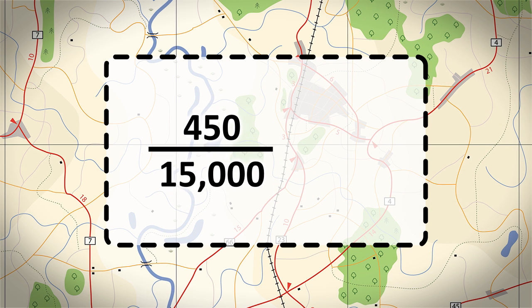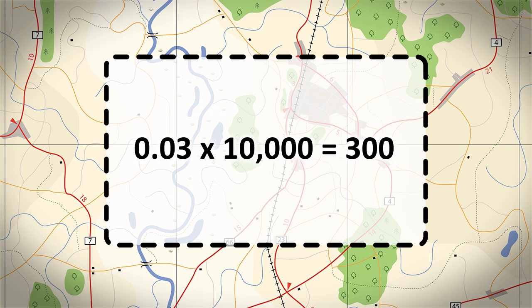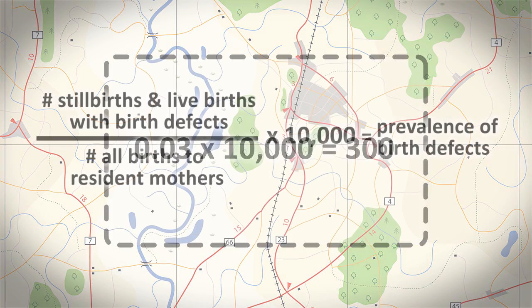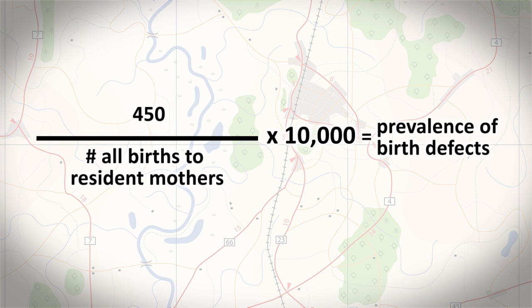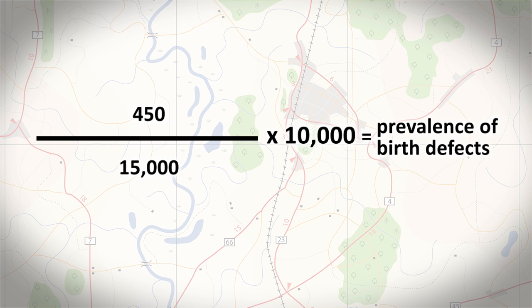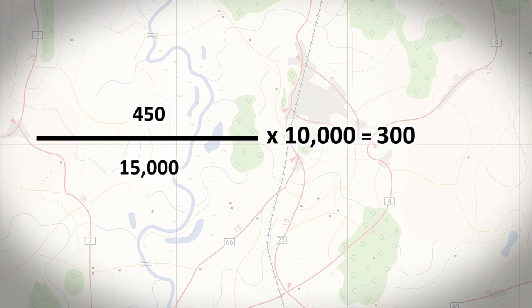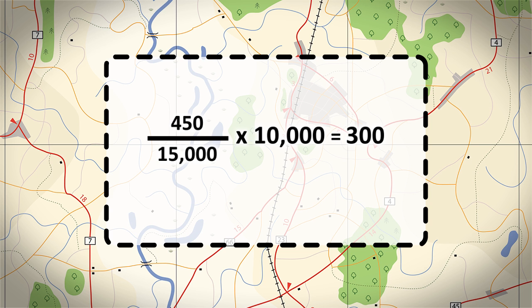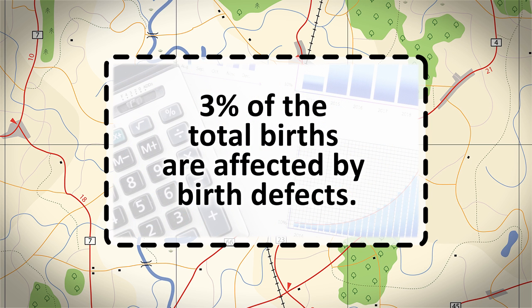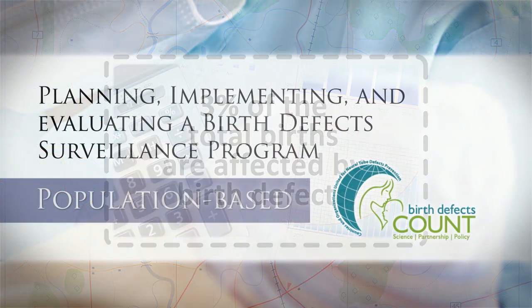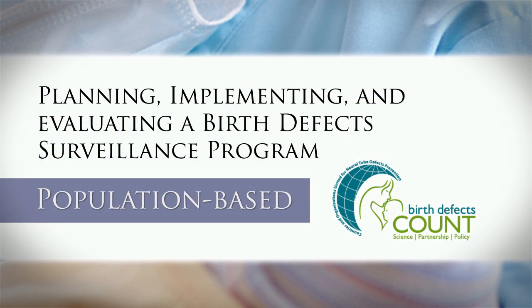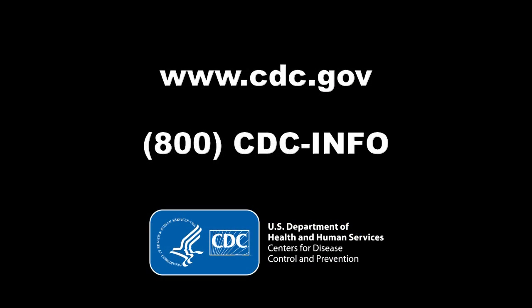Finally, divide the numerator by the denominator and multiply the result by 10,000. For example, if in one year 450 stillbirths and live births with birth defects are divided by 15,000 total births and then multiplied by 10,000, the result is 300 cases of birth defects per 10,000 births. One could summarize this result as 3% of the total births are affected by birth defects. Data on pregnancy outcomes are used to estimate and describe the prevalence of birth defects within a catchment area and within a time period of one year.